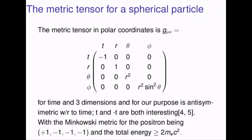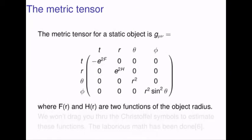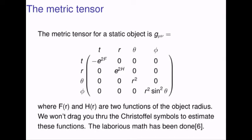Our example keeps things as simple as we possibly can. Here we present a metric tensor in polar coordinates for time and three dimensions. For our purpose it is anti-symmetric with respect to time. T and minus T are both interesting, with the Minkowski metric for the positron being plus one, minus one, minus one, minus one. The total energy of our system is two times the mass of an electron. The metric tensor for the test object is given here, where F sub r and H sub r are two functions of the object radius. We won't drag you through the Christoffel symbols to estimate these functions — that laborious math has already been well done in our reference six.